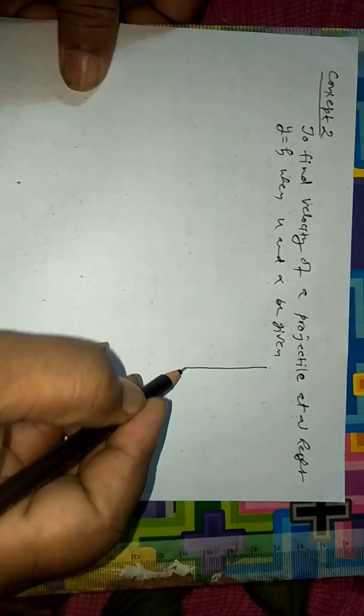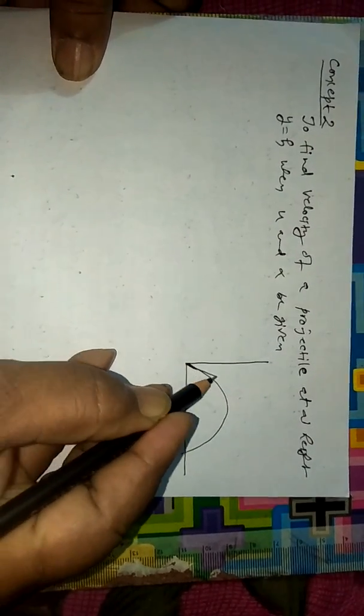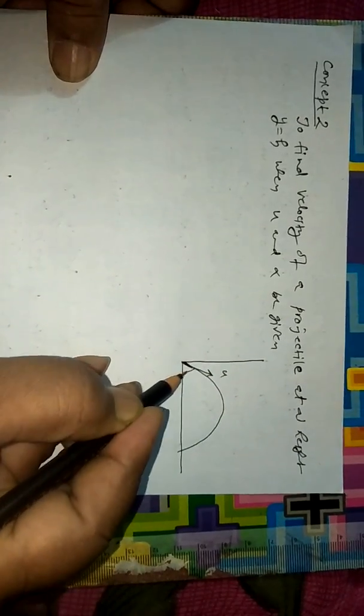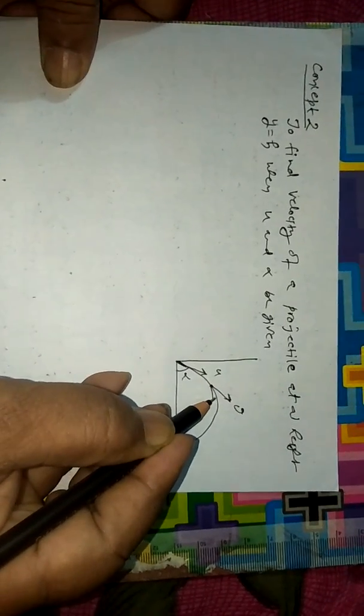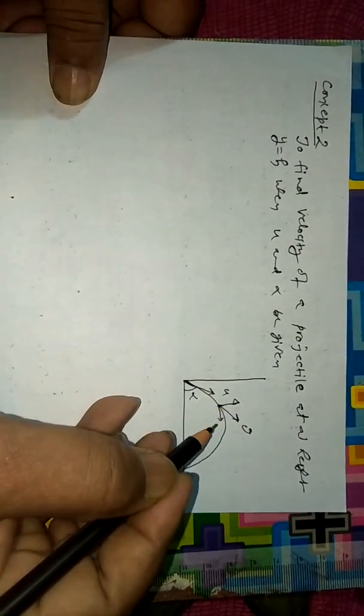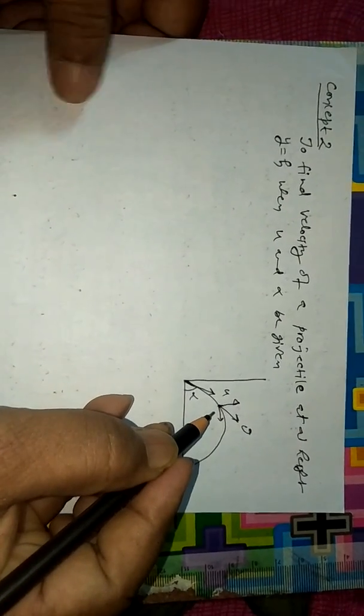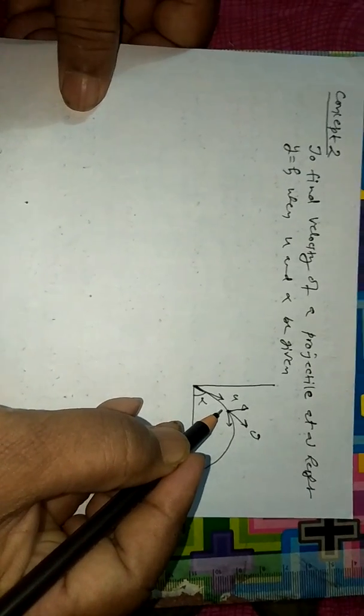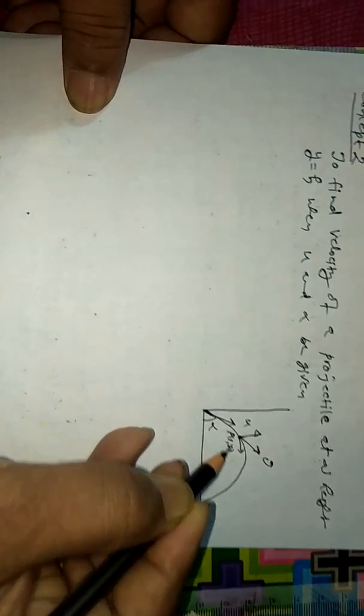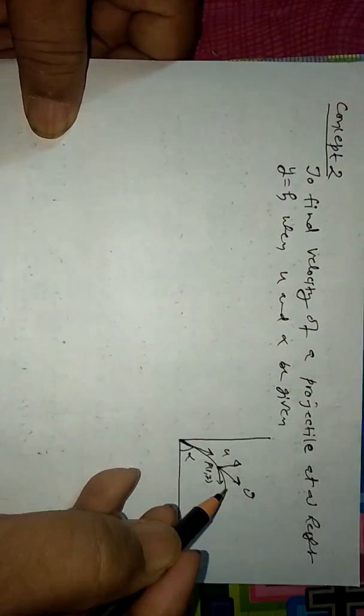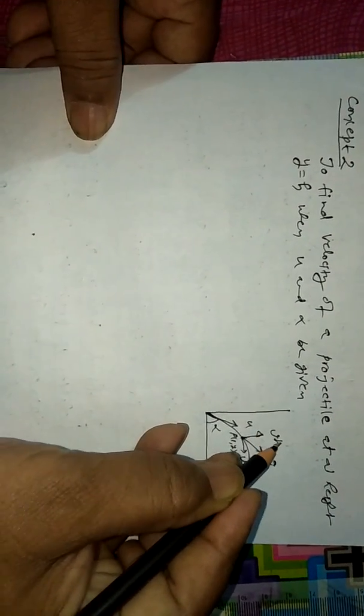Figure: Initial velocity is u, angle of projection alpha, and v is the velocity at the point P(x,y). Horizontal component v cos theta, vertical component v sin theta.